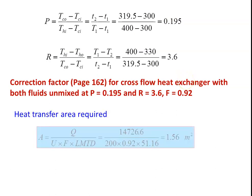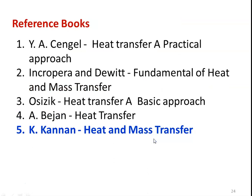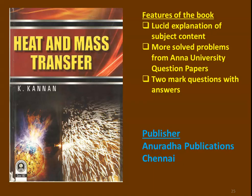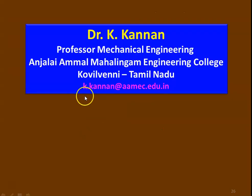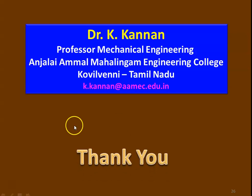Area required: A = Q/(U × F × LMTD) = 14,726.6/(200 × 0.92 × 51.16) = 1.56 m². This is the heat transfer area required for the radiator. These are the reference books used; you may refer to them for further details. The mail ID is given here — you can write for any clarification or doubts on heat exchanger design. Thank you, and we will meet again.